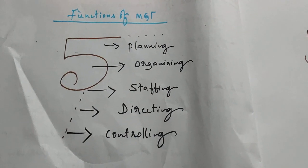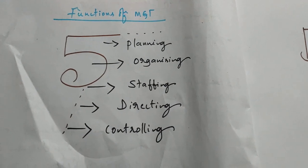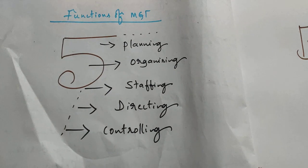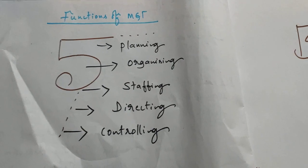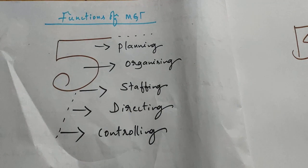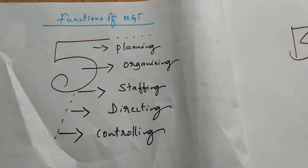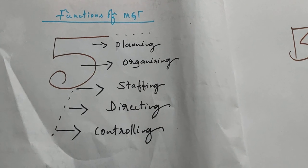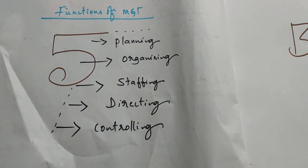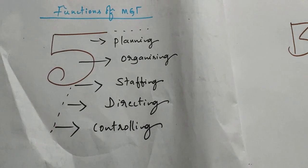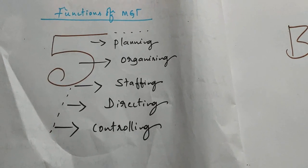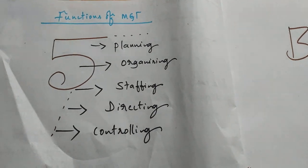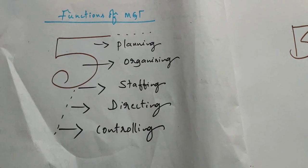Next is staffing. Once the system and structure are ready, we need people and employees. To run a commerce college, we need commerce faculty, economics faculty, business faculty, accountancy faculty, statistics faculty, CS faculty, and Kannada and English language faculties. Staffing means recruiting and selecting the right people and assigning the right work to the right people. Staffing is related to human resource management.